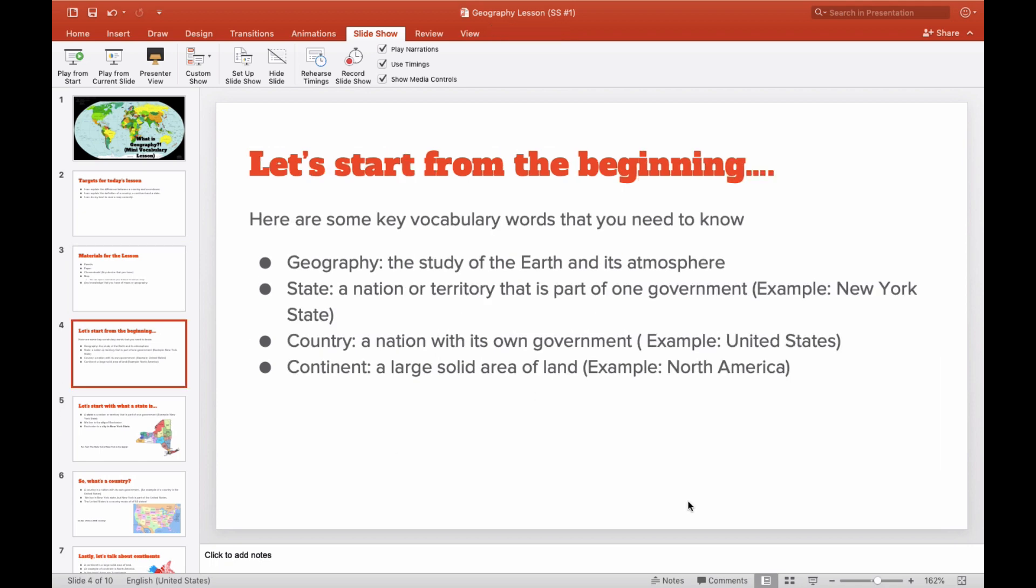So here are some key vocab words. You can write these down. You can just pause the video and then take these down in your notebook. So our first one is geography. The study of the earth and its atmosphere. State. A nation or territory that is part of one government. For example, New York State. We are part of one government. Country. A nation with its own government. For example, the United States. And then lastly, continent. A large solid area of land. For example, North America.